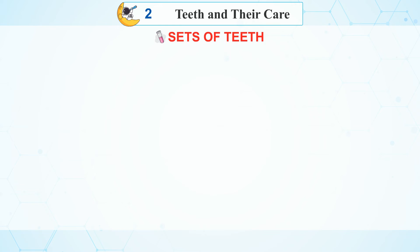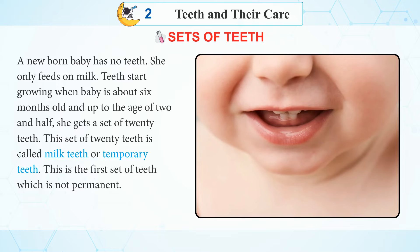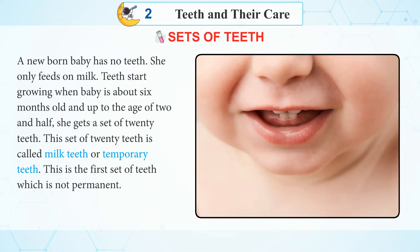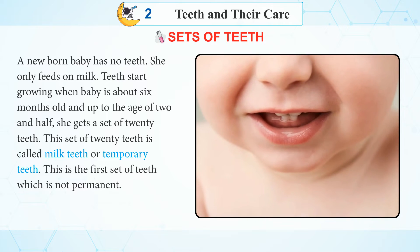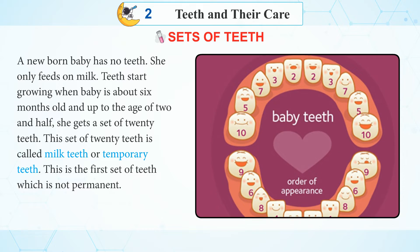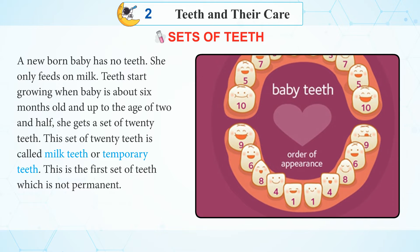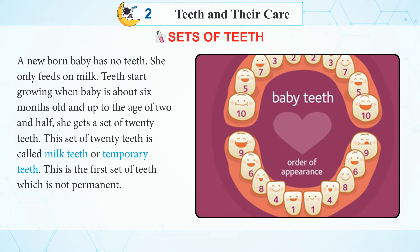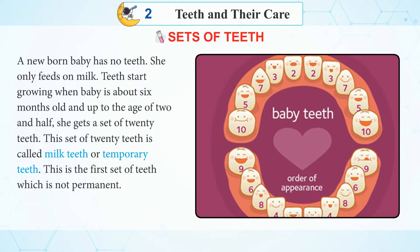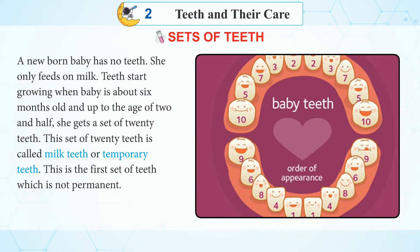Sets of teeth. A newborn baby has no teeth and only feeds on milk. Teeth start growing when a baby is about 6 months old, and up to the age of 2 and a half, she gets a set of 20 teeth. This set of 20 teeth is called milk teeth or temporary teeth. This is the first set of teeth, which is not permanent.